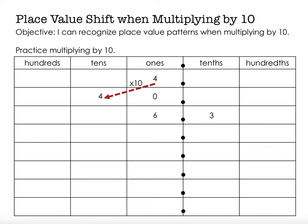Now I want to take the number 6 and 3 tenths. Remember, with decimal numbers we read the digits to the left like we normally would, then we say "and" for the decimal point, then we read the digits afterwards just like we would read numbers, but we use the label of the last place value. So this is 6 and 3 tenths. Say it with me please: 6 and 3 tenths.